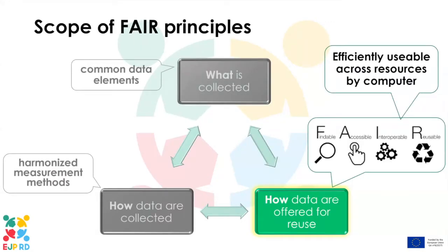The scope of the FAIR principles — what it is about and what it is not about. Data stewardship covers many things: what is collected, how data are collected, what methods and measurement methods are used. FAIR is about that third element — how data are offered for reuse. That is the main purpose of FAIR. The findable, accessible, interoperable, and reusable for machines part is also an essential element of the FAIR principles.